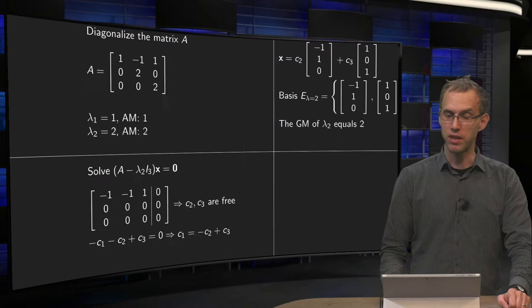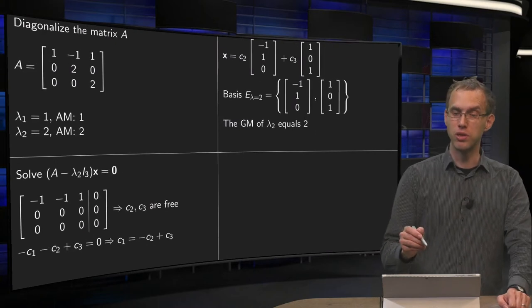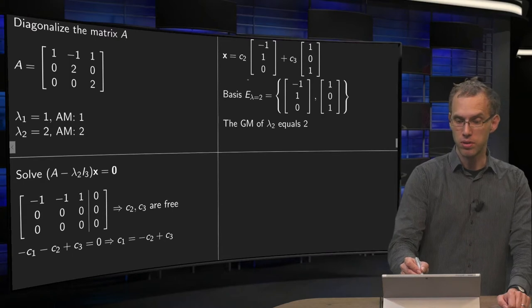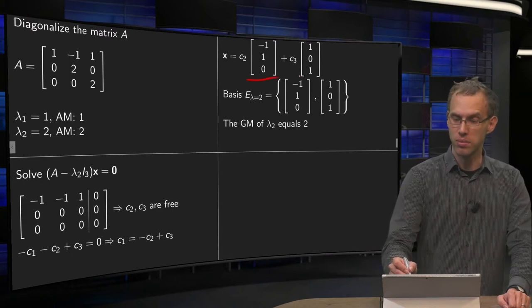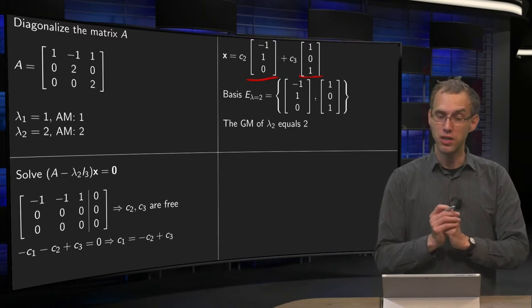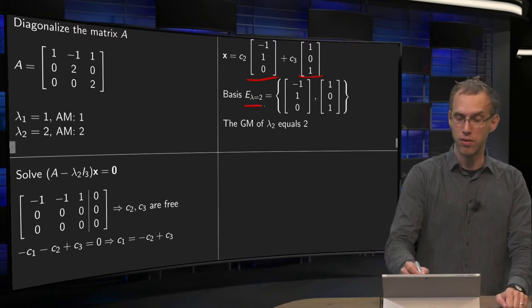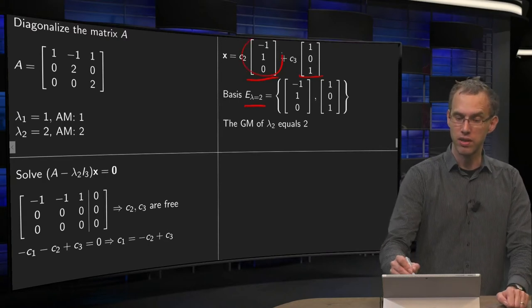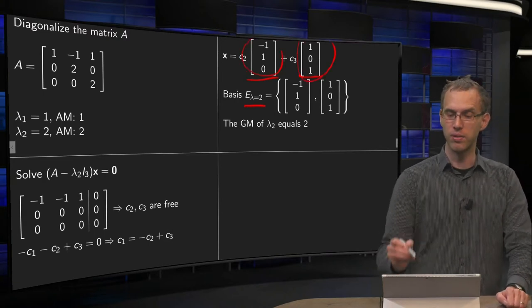Then we write this in parametric vector form, so our solution x becomes c2 times this vector plus c3 times this vector. And this gives us a basis for our eigenspace of lambda equals 2, a basis consisting of these two vectors.